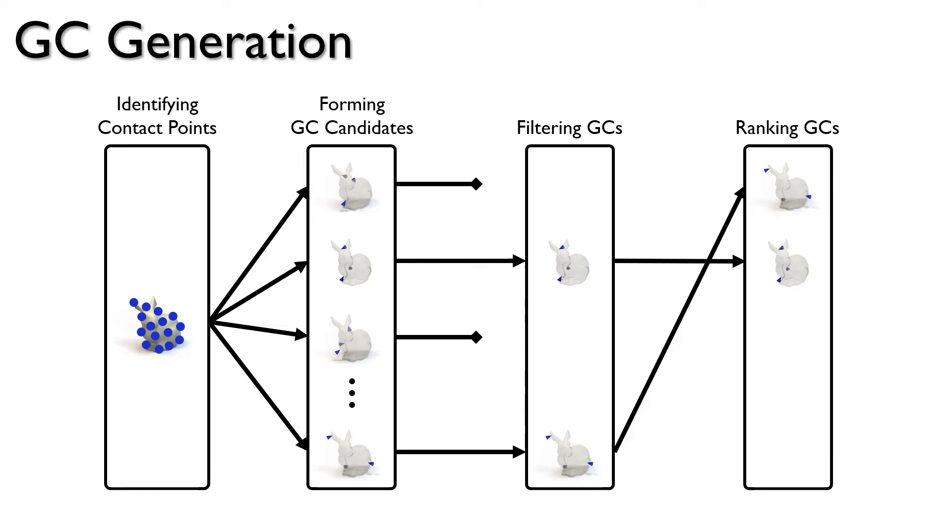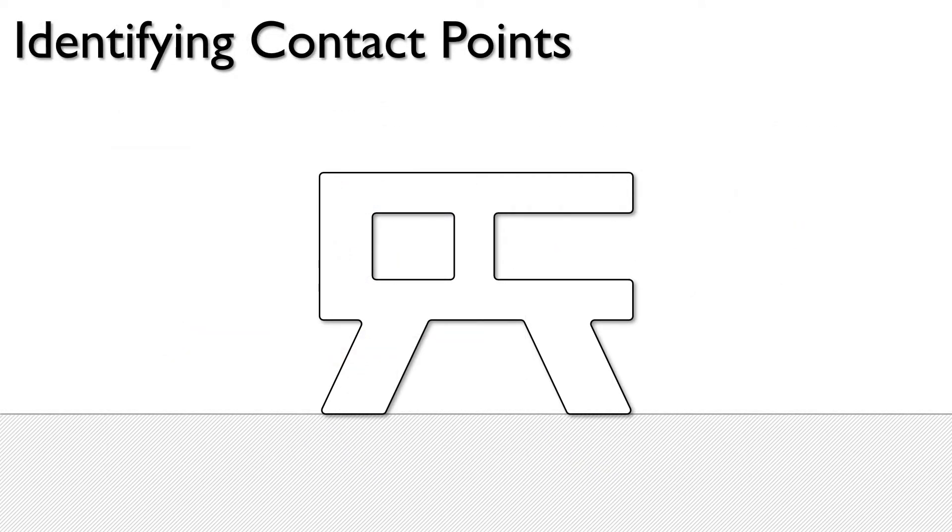Let us now focus on identifying potential contact points. For ease of illustration, consider this 2D object. To find potential contact points, we uniformly randomly sample points on the surface and remove points that are unreachable or occluded by the floor.